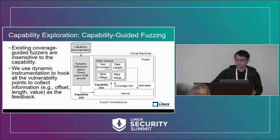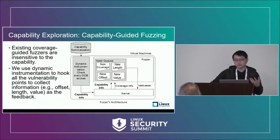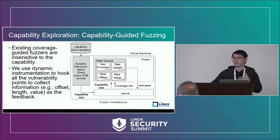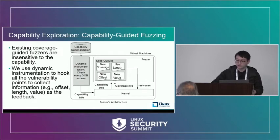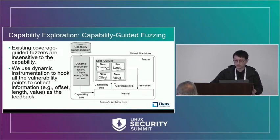In order to explore other parts of kernel code related to the vulnerabilities, we propose a novel capability-guided fuzzing solution. Existing coverage-guided fuzzing solutions are ineffective because they only focus on coverage and are insensitive to the capabilities we care about. Therefore, we use dynamic instrumentation to hook all vulnerability points to collect more information — such as offset, lengths, and values — as feedback, and we maintain different queues for different feedback.